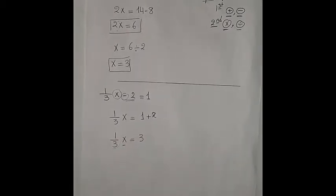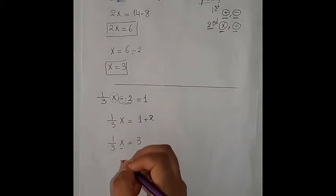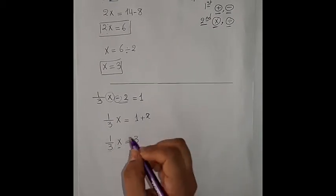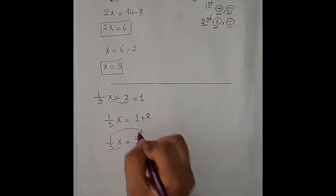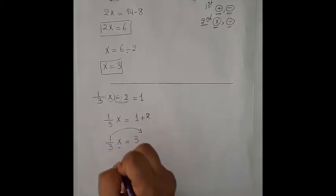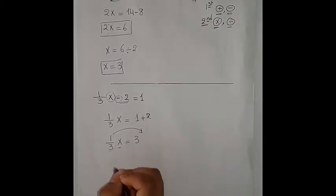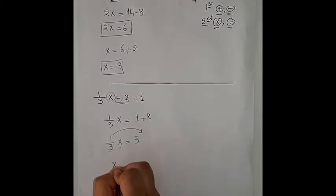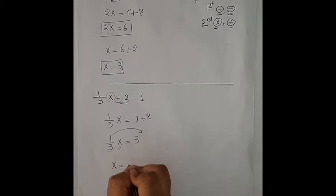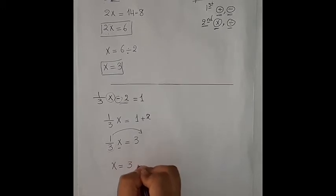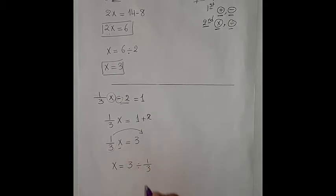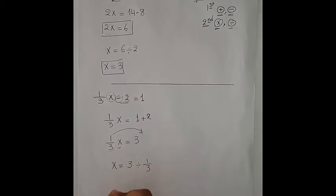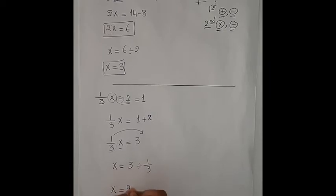Now I have ⅓ multiplied by x, so to get the value of x we will move ⅓ to the next side with an inverse operation, which is divide. So x equals 3 divided by ⅓, so x equals 9.